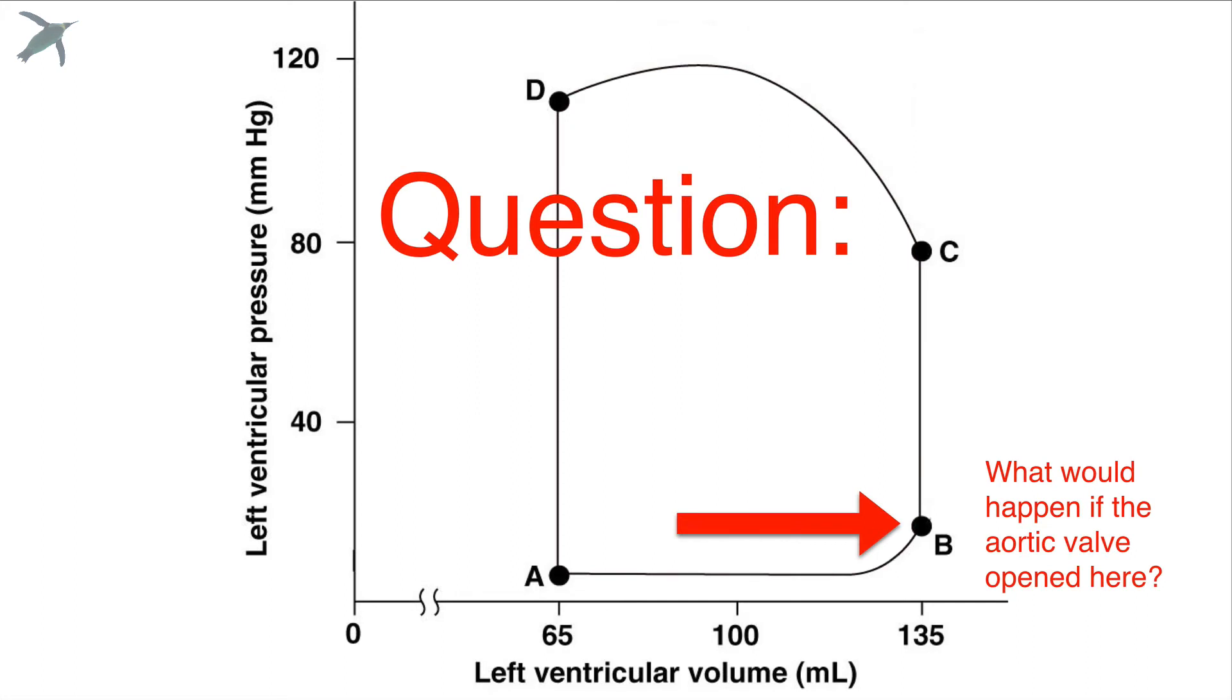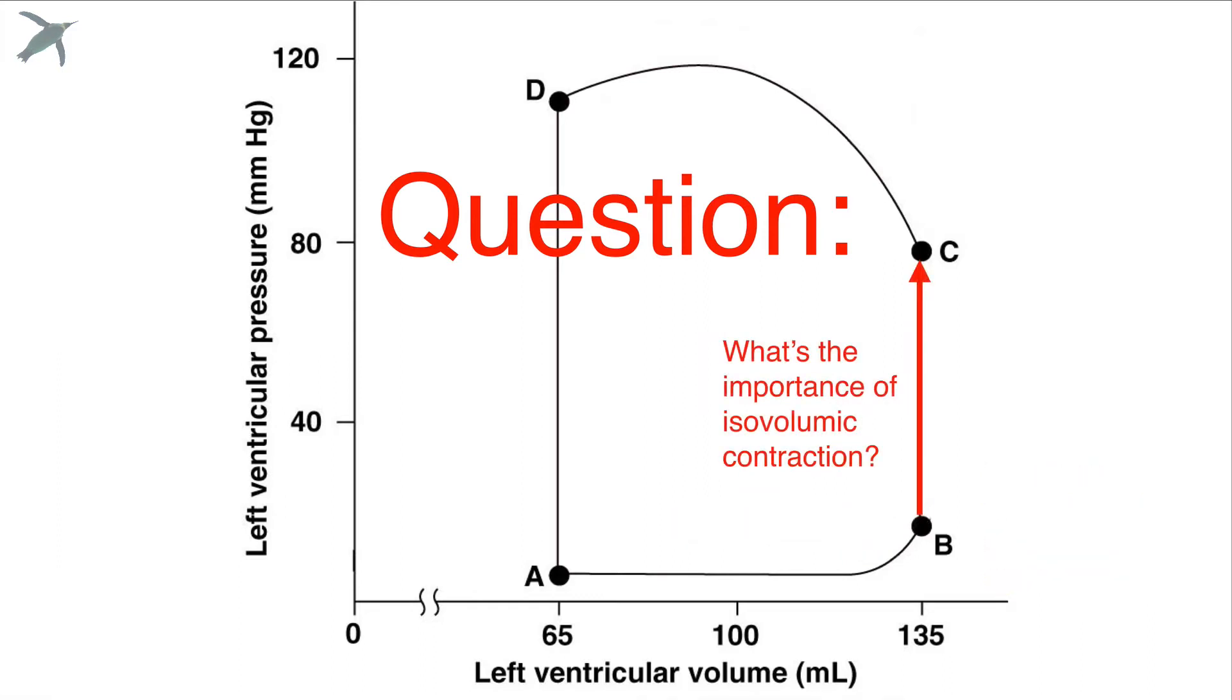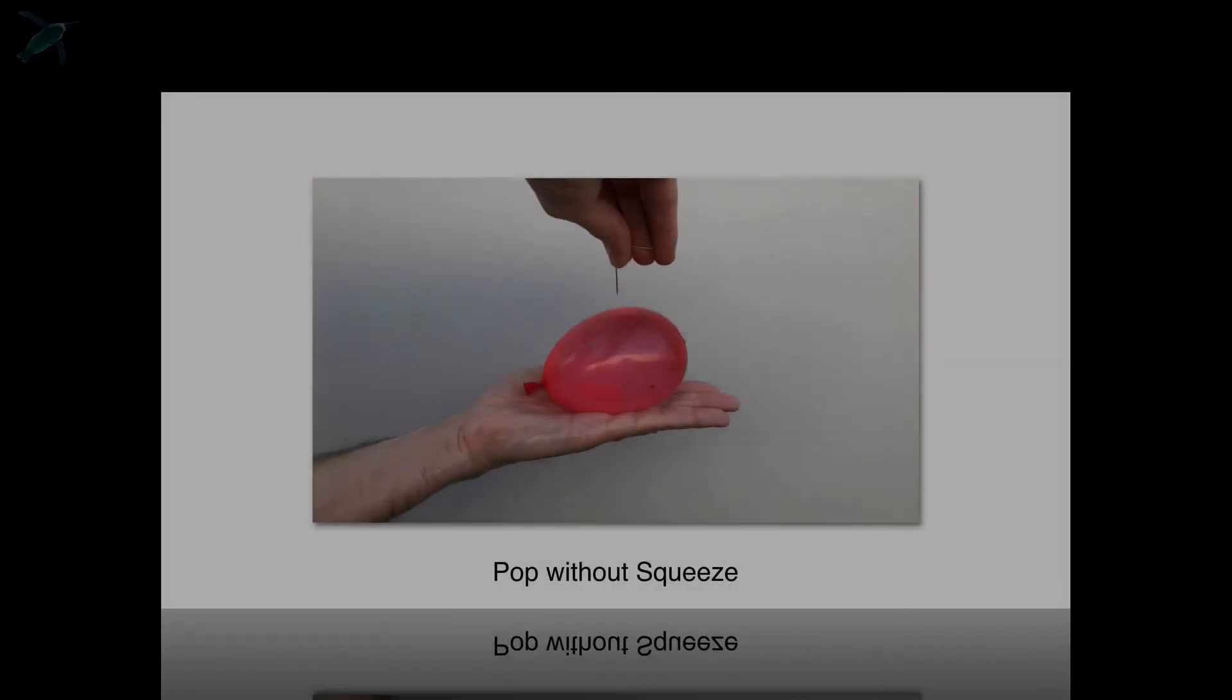You're going to get this question. What would happen if the aortic valve opened here instead of at letter C? A related question is, what's the importance of isovolumic contraction? What is the big deal about this? We're going to give you a visual to help you remember it.